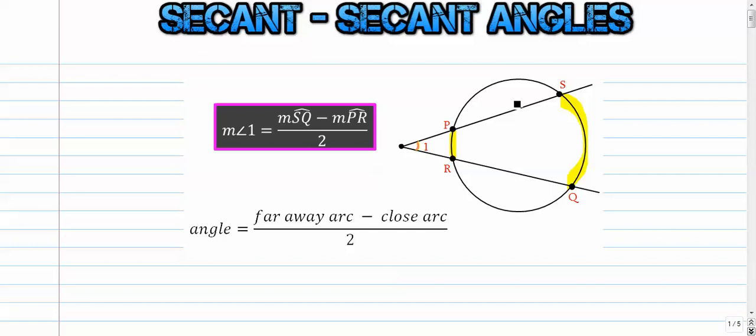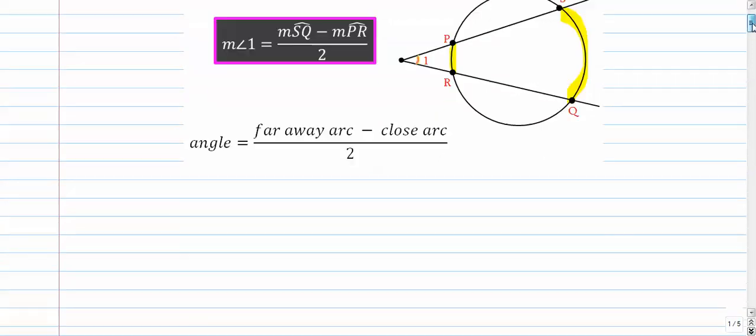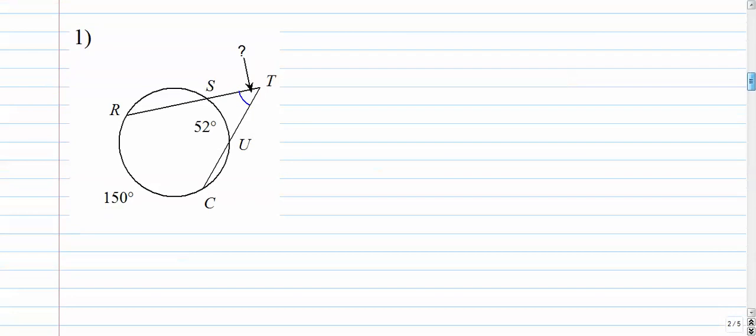So let's see if we can use that in a few examples. Number 1. So again, angle equals faraway arc minus close arc over 2. In this case, the angle is missing. Faraway arc is 150, close arc is 52, over 2.